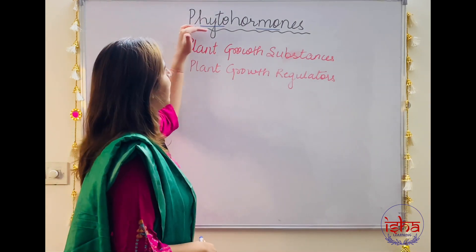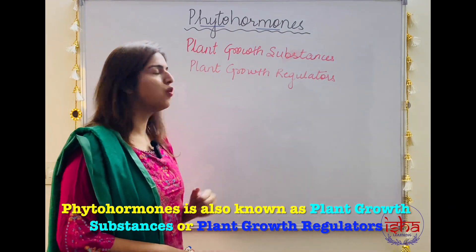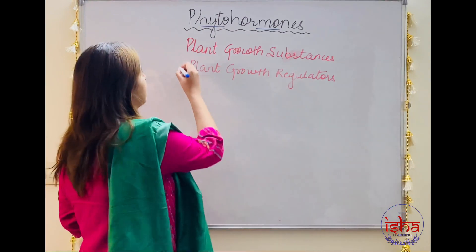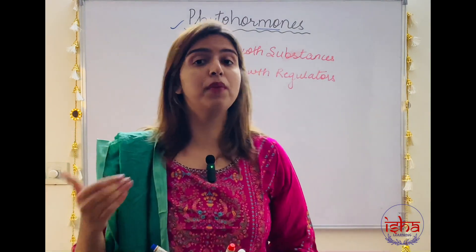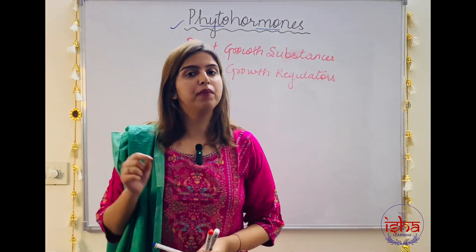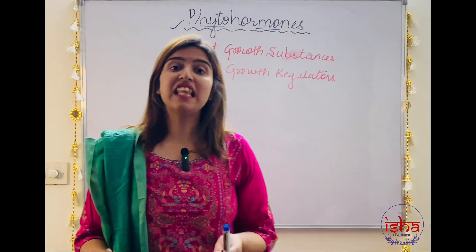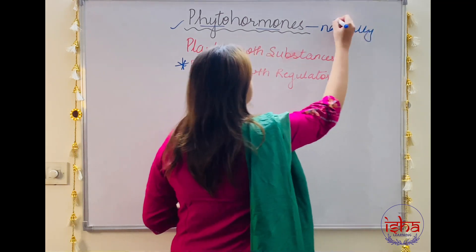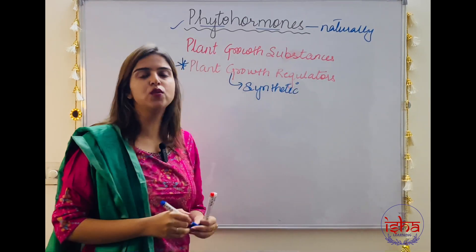Phytohormones, literally plant hormones, are also known as plant growth substances, or often called plant growth regulators. However, this is a misleading term. Plant growth regulators are different from phytohormones. Phytohormones are synthesized in the plant body itself, so the plant makes these molecules inside its body. Plant growth substances are manufactured in factories or labs — they are synthetic molecules. Phytohormones are naturally made in the plant body, whereas plant growth regulators are synthetic, though these words are often used interchangeably.